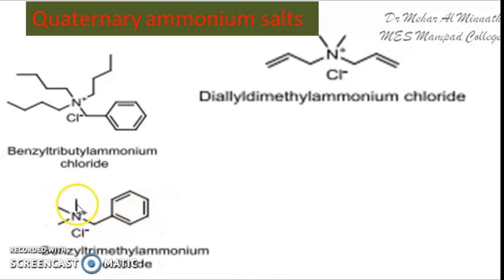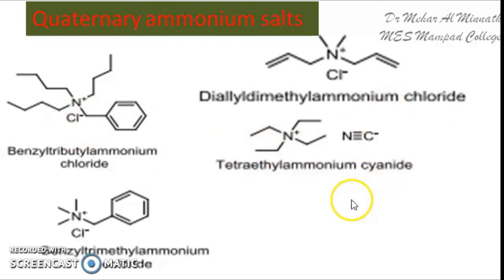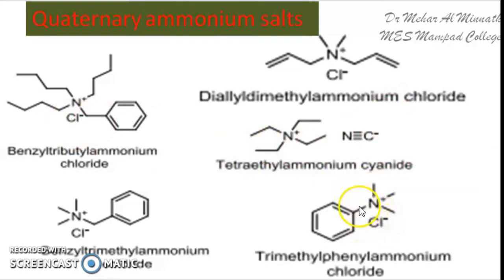Another example is benzyl tributyl ammonium chloride — here you have three butyl groups and one benzyl group attached to the nitrogen. Then you have tetraethyl ammonium cyanide, where the anion is cyanide. Instead of chloride, you can even use bromide or iodide as the anion. This is trimethyl phenyl ammonium chloride — you are using a phenyl group. So by changing the alkyl or aryl R-group attached to the nitrogen, you get different types of quaternary ammonium salts which can be used as phase transfer catalysts.